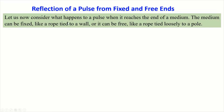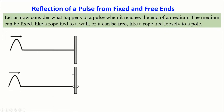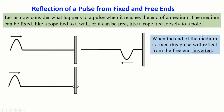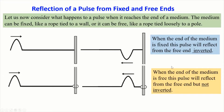Let us consider what happens to a pulse when it reaches the end of a medium. The medium can be fixed, like a rope tied to a wall, or it can be free, like a rope tied loosely to a pole. When the end of the medium is fixed, the pulse will reflect from the fixed end inverted. When the end of the medium is free, the pulse will reflect from the free end but not inverted.